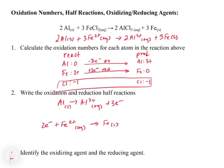Now we identify the oxidizing and reducing agents. Aluminum is the species being oxidized, so it is the reducing agent. Iron is being reduced, so it is the oxidizing agent. Remember, it's the opposite — the species being oxidized is the reducing agent, and the species being reduced is the oxidizing agent.